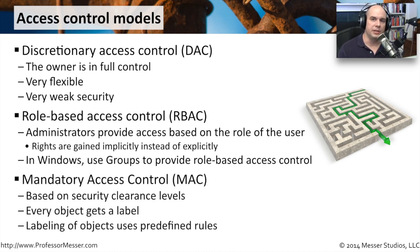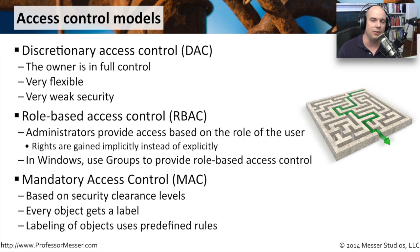We often see mandatory access control used in government-type environments where there are security clearance levels. Everything you need to access would have a label associated with it — every document, every printer, everything would be labeled with secret, top secret, or code blue. Your account would be given a certain level of access. For example, if your access is top secret, you could access anything labeled top secret or secret, but you would not be able to access anything labeled code blue. It's an interesting approach to ensure only people with the appropriate clearance level have access to those resources.